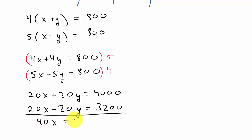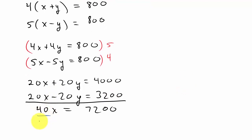And then we add. So I get 40x is equal to, well, let's see, that's going to be 4,000 plus 3,200. That gives me 7,200. And then we'll divide both sides by 40. So 7,200 divided by 40, that is going to give me x is equal to 180. And that would be miles per hour.